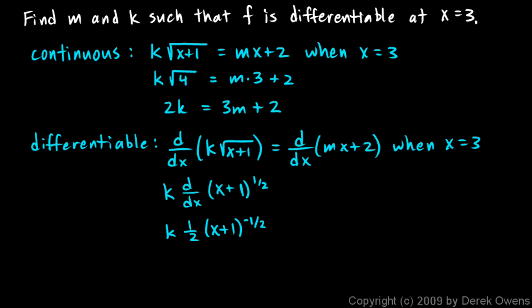And that has to equal the derivative of the right side. And the derivative of the right side is just m. The derivative of this first term here is m and the derivative of the second term is 0. So let's rewrite this left side in a little bit more understandable form. The k is in the numerator and then we have 2 times the square root of x plus 1. And that's going to equal m. And that's going to be the case when x equals 3.